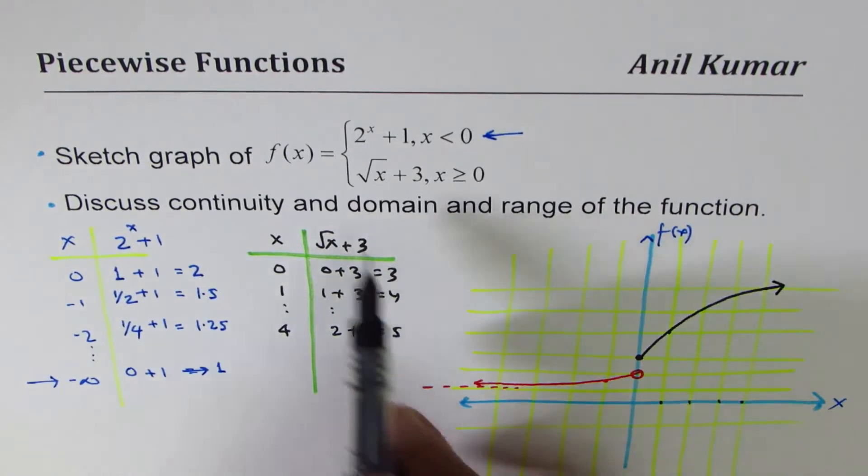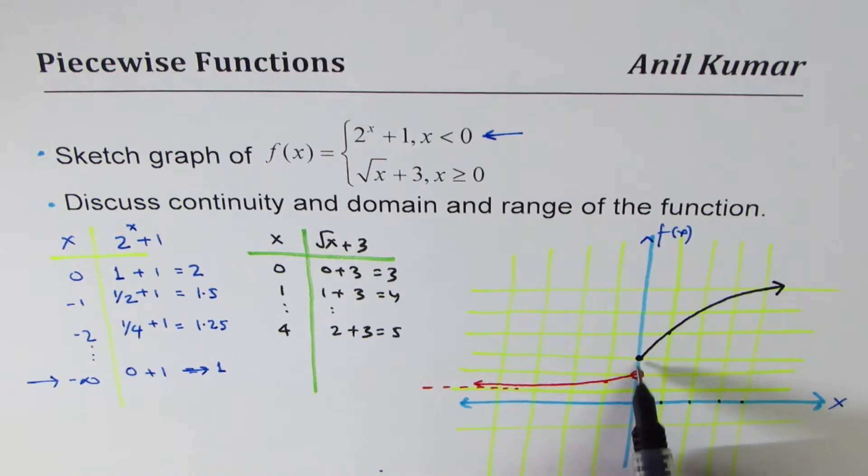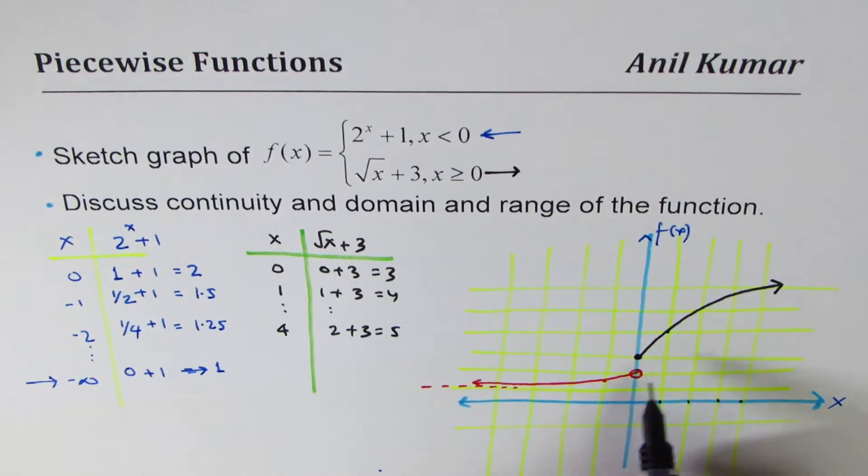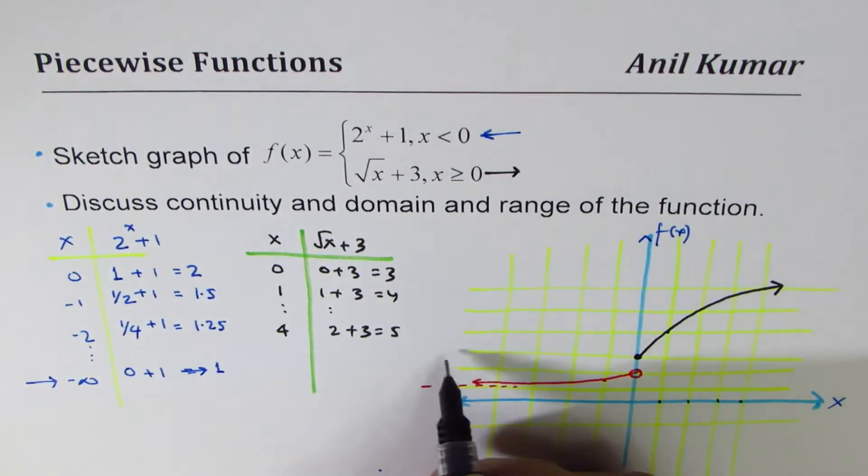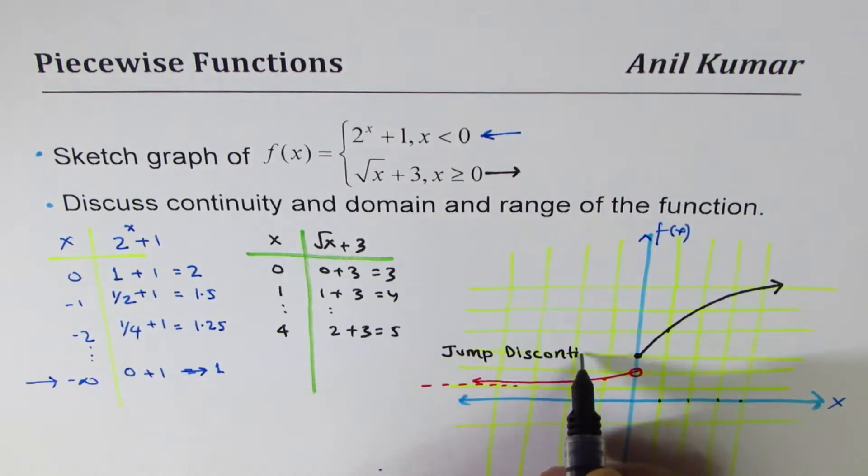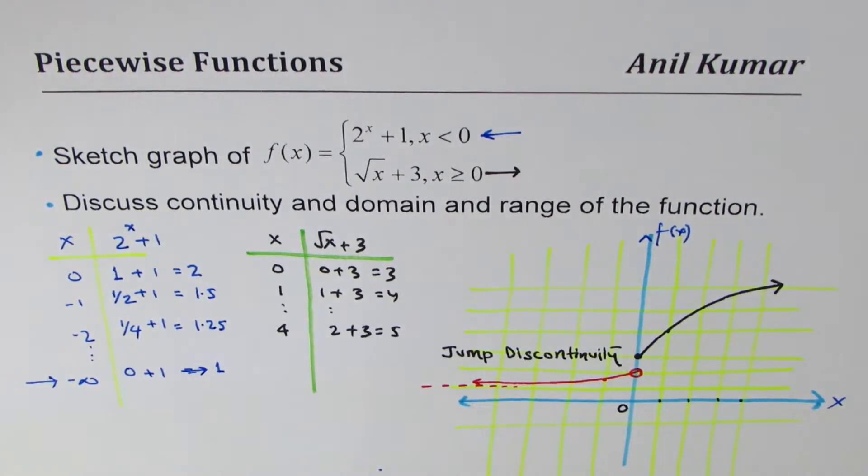So that's the other part, so we have a jump discontinuity here. Is it okay? Clear? At x equals 0, we have a jump discontinuity.